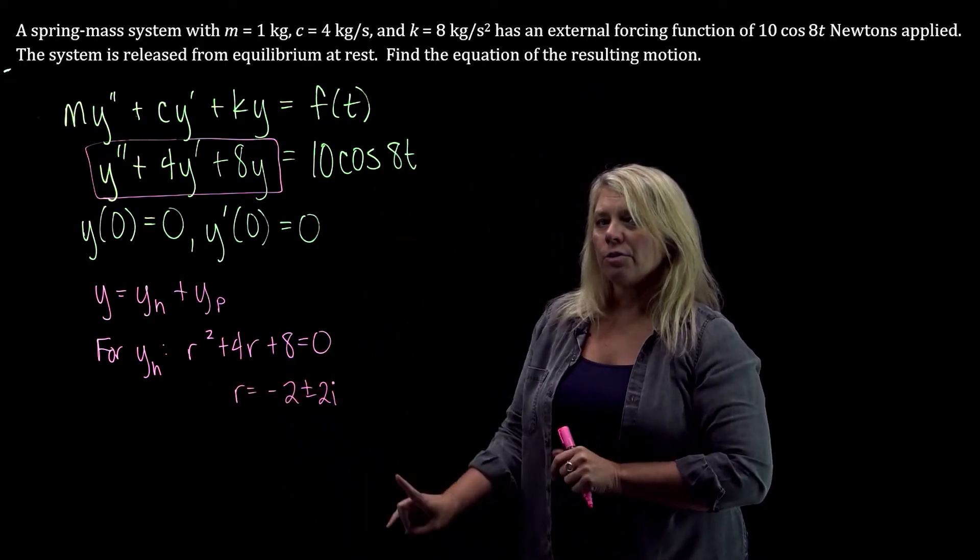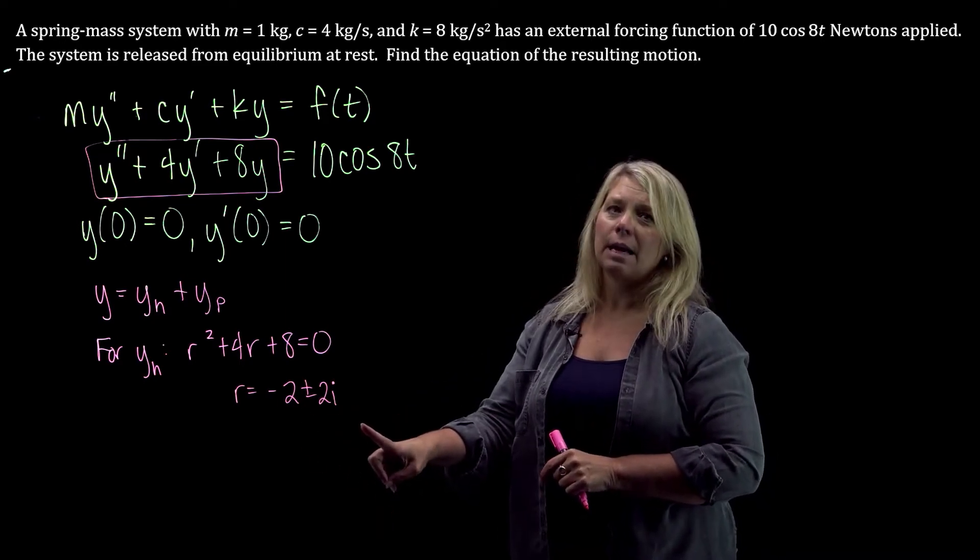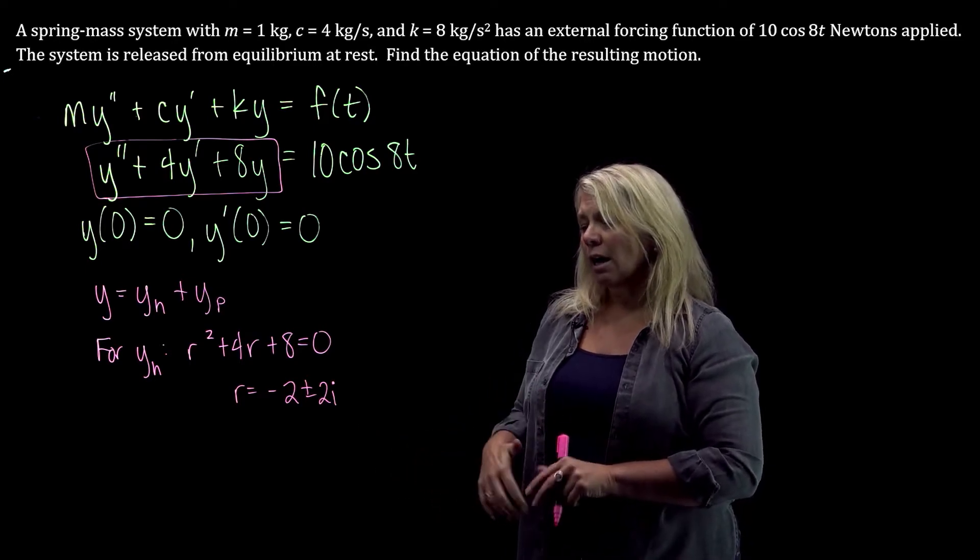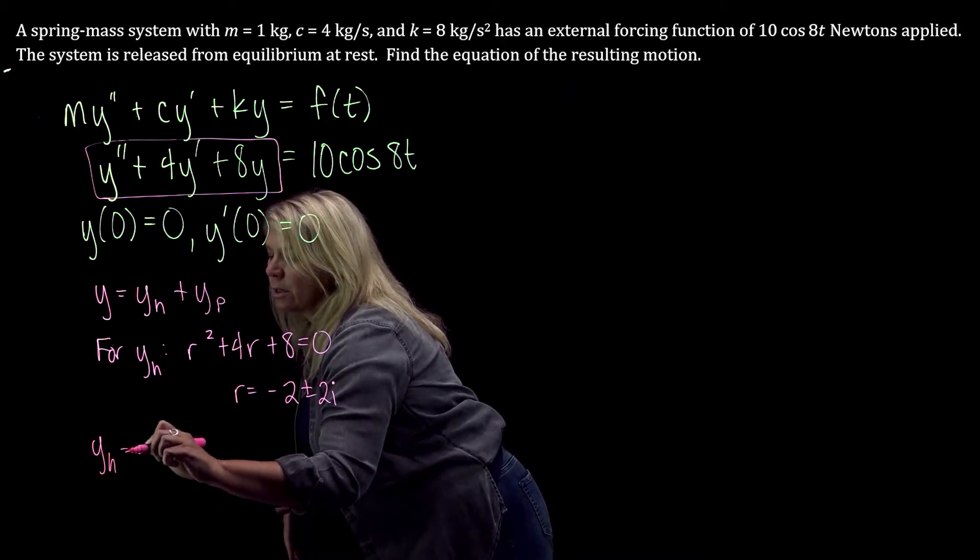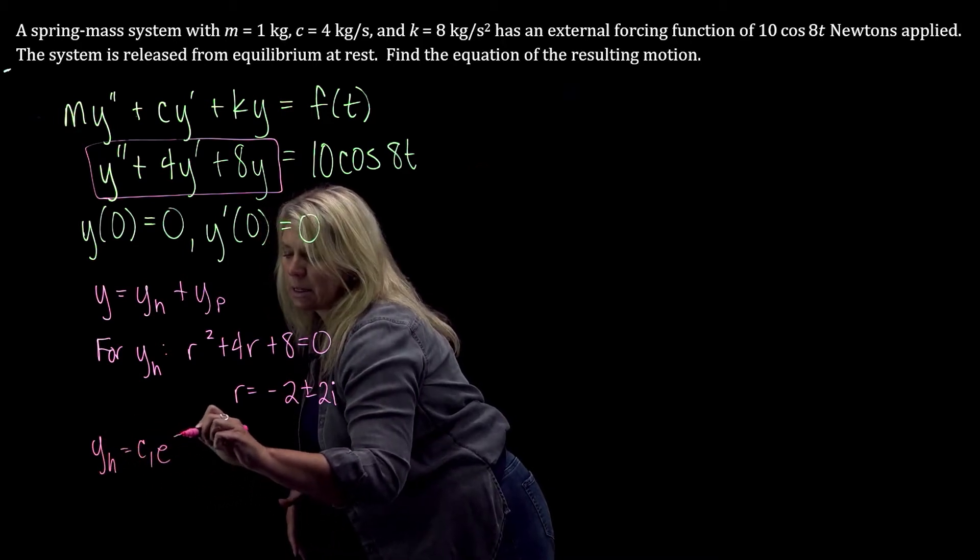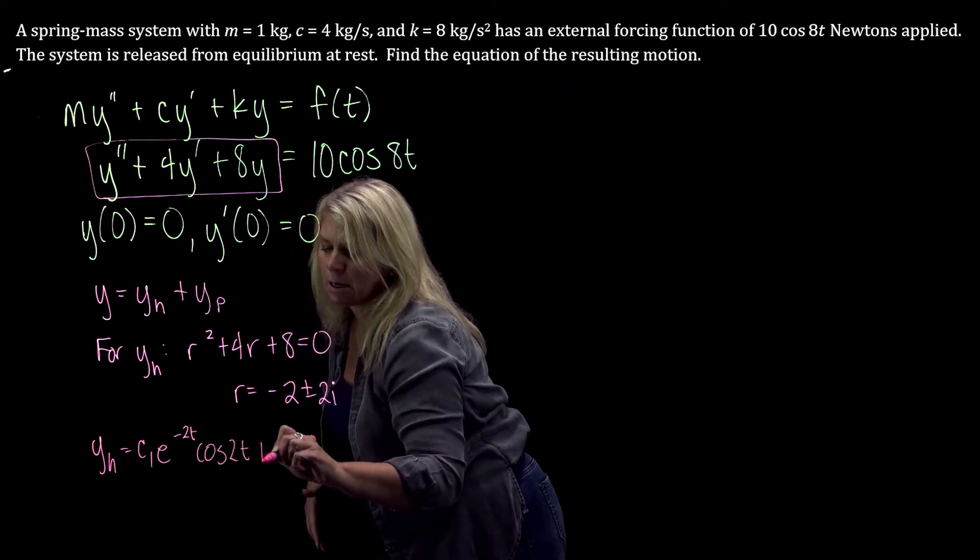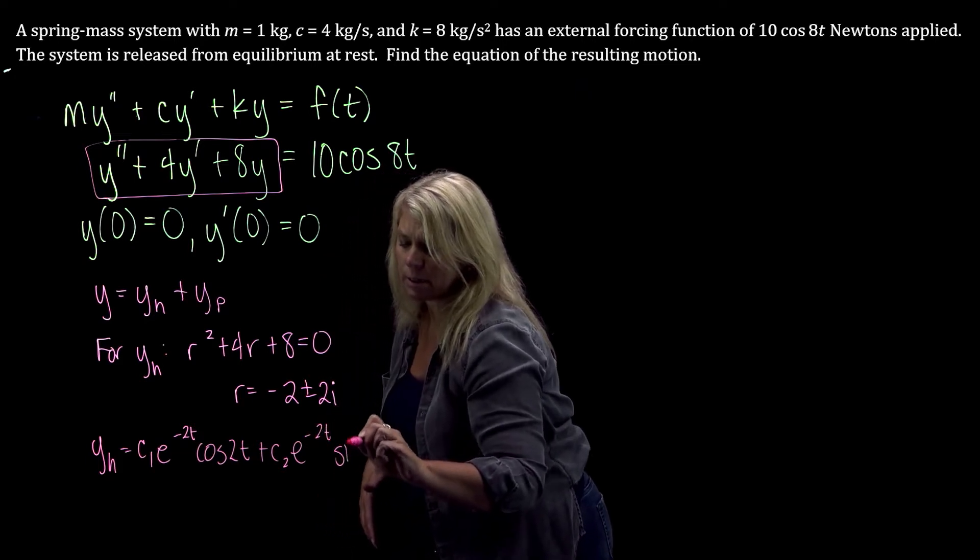You might pause the video, try that quadratic formula, make sure that you get that same value. If not, double check your quadratic formula work. Alright, so that tells you the general form of your yh solution: c1 e to the negative 2t cosine 2t plus c2 e to the negative 2t times sine 2t.